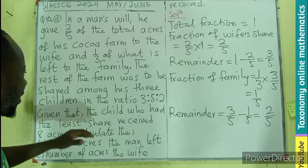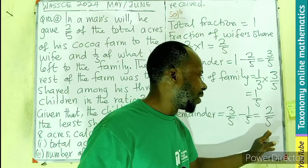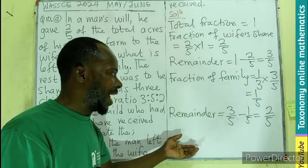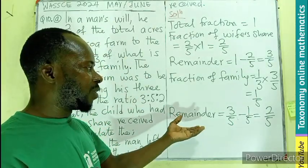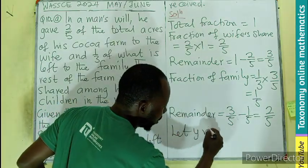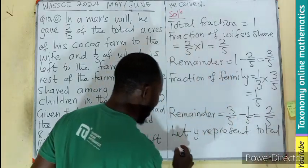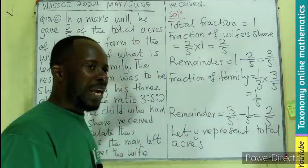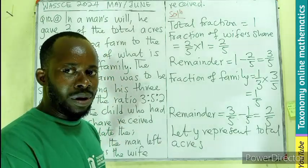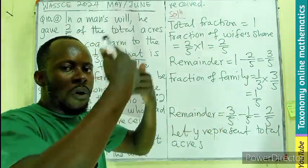So this is going to be shared among the three children in this ratio. So this is going to be shared. So now this becomes the total for the children. Now, all these we are doing, they are all in fraction. None of them has been given in terms of the acres. So now let's just see, we let Y represent total acres. If Y represent total acres, then it means that acres of land shared among the children will be two-fifths of the Y. They are taking two-fifths of the land.